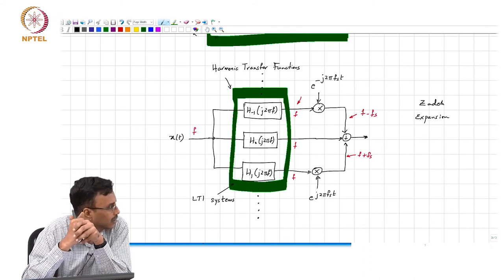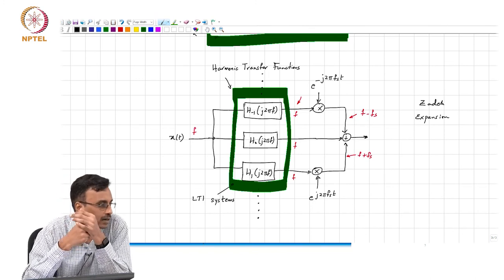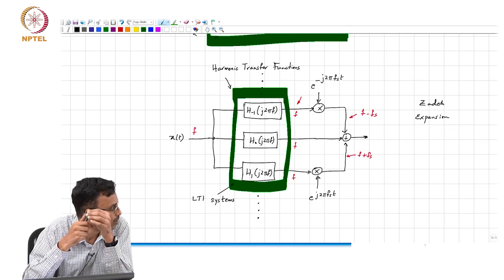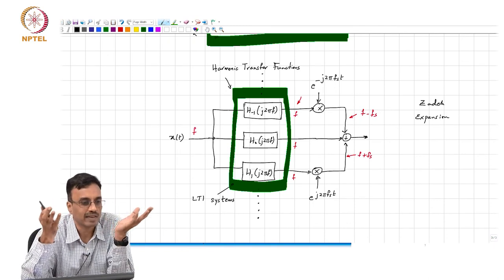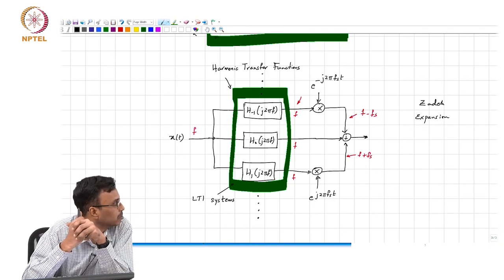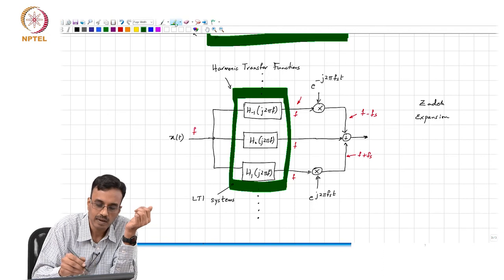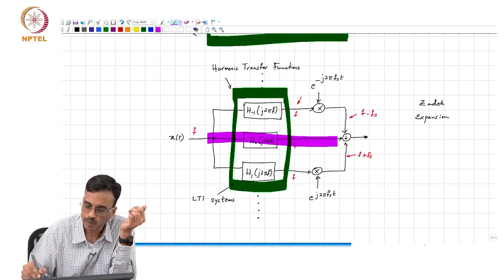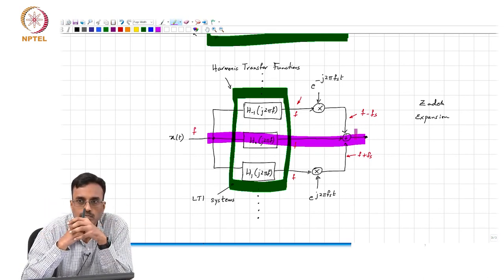The sanity check is that an LTI system is a special case of an LPTV system, so the results should make sense in that special case. For example, here if all the h sub k are zero other than h sub 0, then the only arm that remains is this one, and that is the standard LTI system.